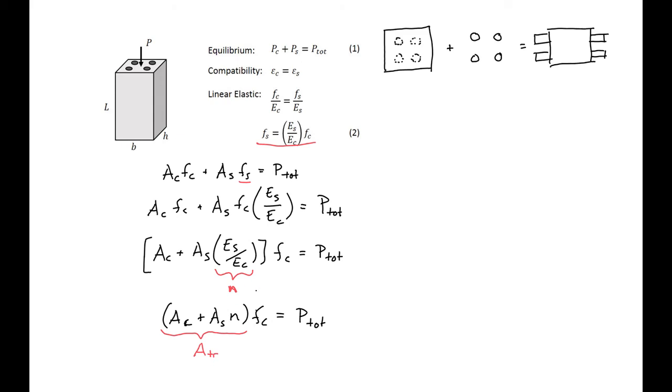So our transformed area we can also express visually, where we'll have the area of our concrete minus the steel plus N times the area of our steel equals our transformed area.